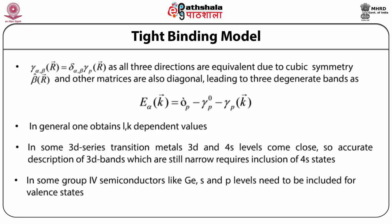In general one obtains L k-dependent eigenvalues. However, in several problems, levels other than just the degenerate levels need to be included when they are close in energy. For example, in some 3d series transition metals, 3d and 4s levels come close, and accurate description of 3d bands requires inclusion of 4s states. Similarly, in group 4 semiconductors like germanium, s and p levels need to be included for valence states. The mixing of atomic levels in solids is referred to as hybridization.